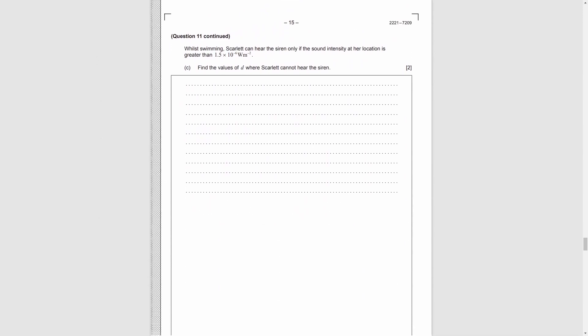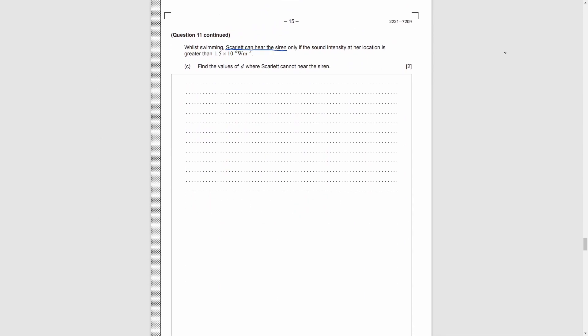Part C, a person can hear the sound if i is greater than the value here. We need to find d such that the person cannot hear the sound. Be careful, this is very tricky. As the word is cannot hear, so we need to do the opposite. Set i to be smaller than the value but not greater than that. Solving the inequality by algebraic skills or by calculator, we get d is greater than 2450.